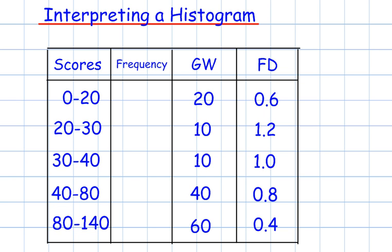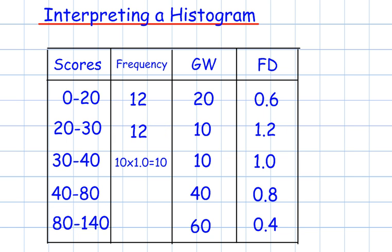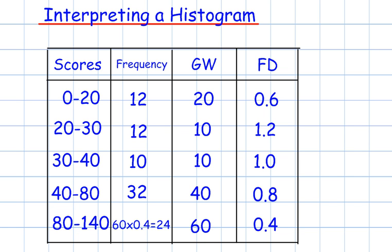To find frequency density we do frequency divided by group width. So to find frequency we need to do the reverse and multiply. The first frequency is 20 × 0.6 = 12. Then 10 × 1.2 = 12, 10 × 1 = 10, 40 × 0.8 = 32, and 60 × 0.4 = 24.